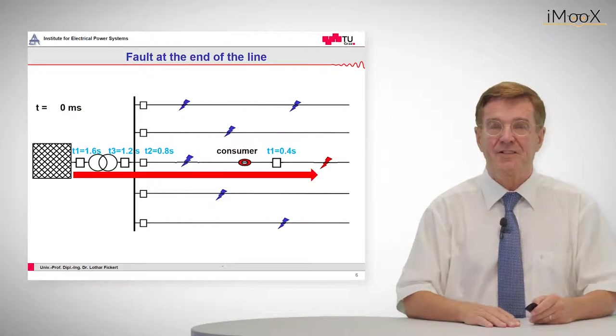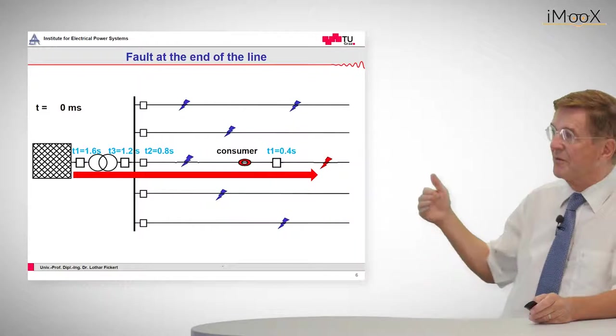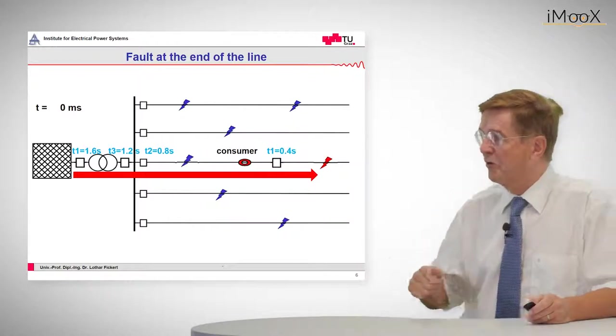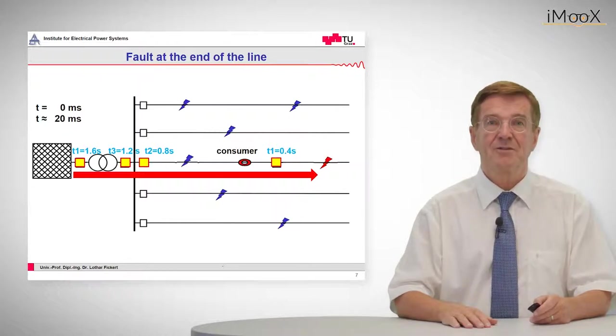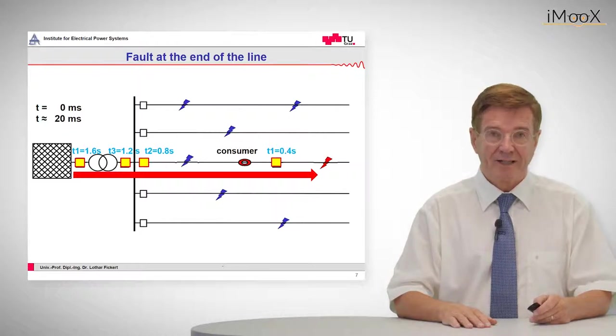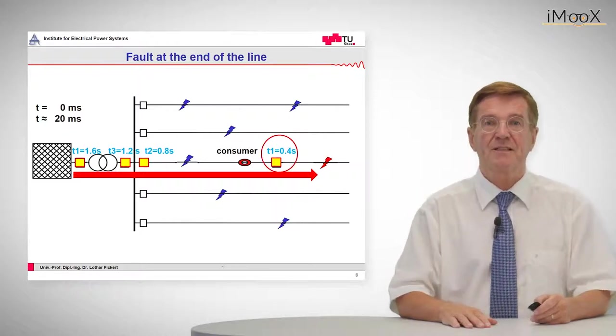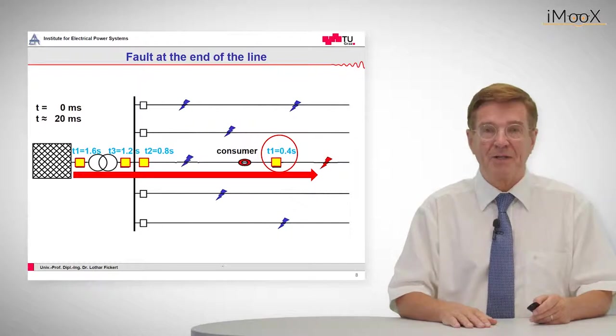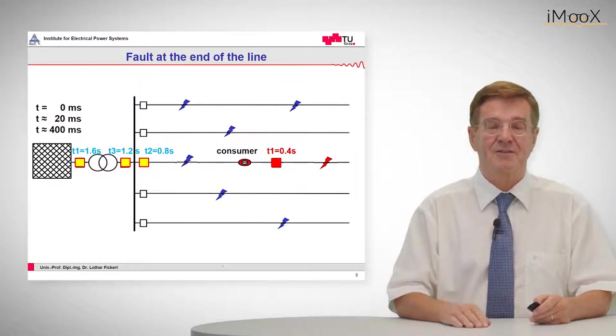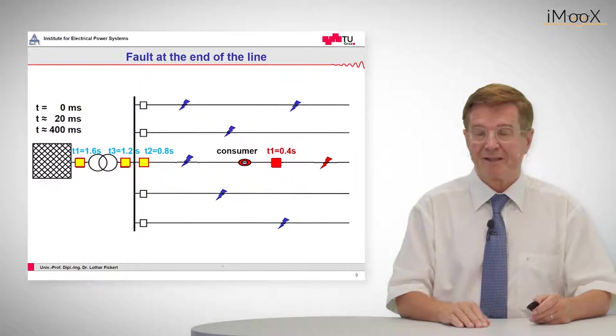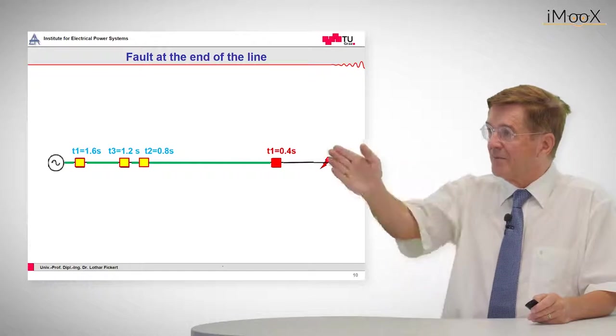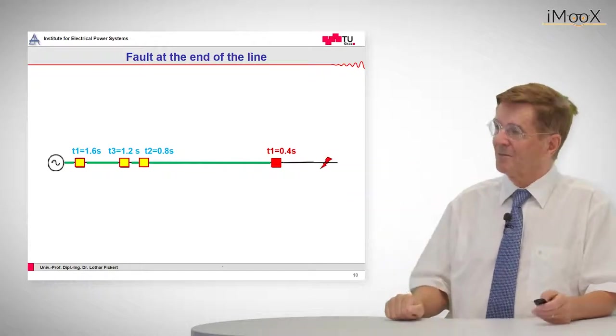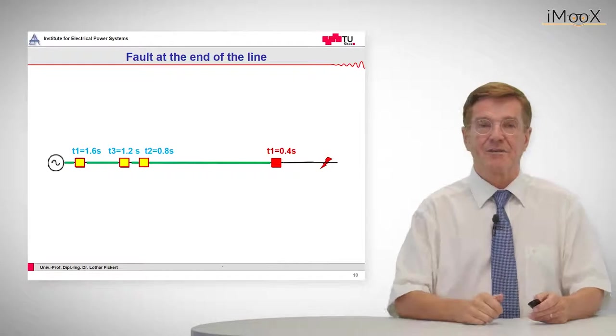Now at the onset of the fault we have a fault current flowing from the grid to the fault and all relays will pick up, which is indicated by a yellow square. After the elapse of the first grading time, which is 0.4 seconds, this relay will pick up and trip, which is indicated in red. So when we look at the status of the network now we will see that we have a pick up of the relays from left to right and the one that is closest to the fault has tripped out.